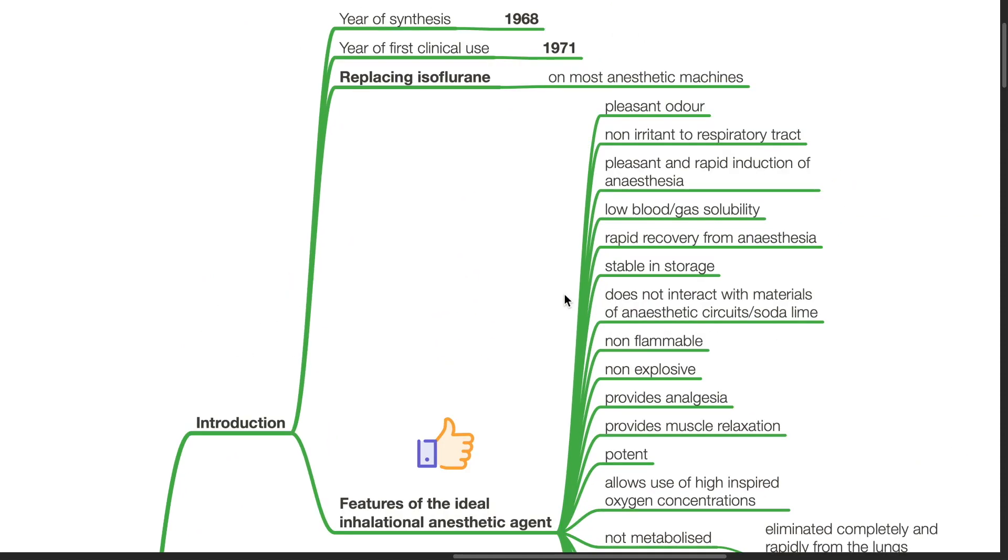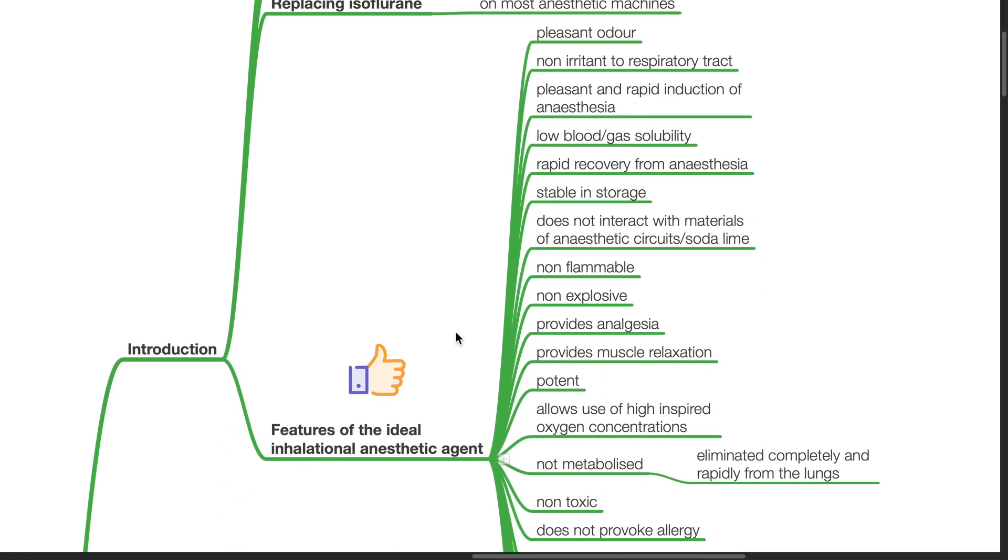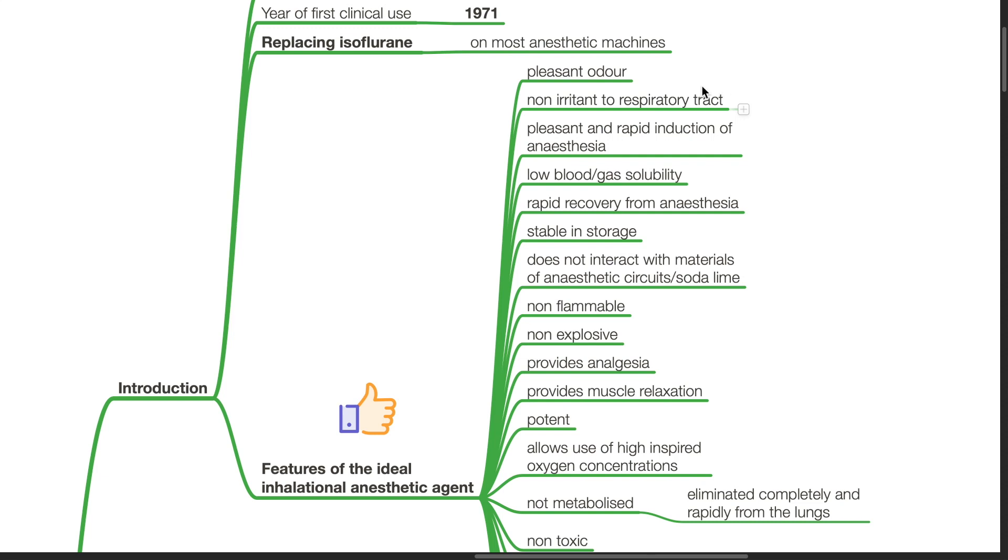Introduction. Sevoflurane was synthesized in 1968 and the year of first clinical use was 1971. It is replacing isoflurane on most anesthetic machines. As a comparison, features of the ideal inhalational anesthetic agent include a pleasant odor, non-irritant to the respiratory tract, pleasant and rapid induction of anesthesia, low blood gas solubility, and rapid recovery from anesthesia.